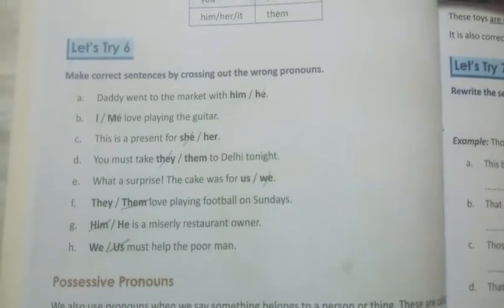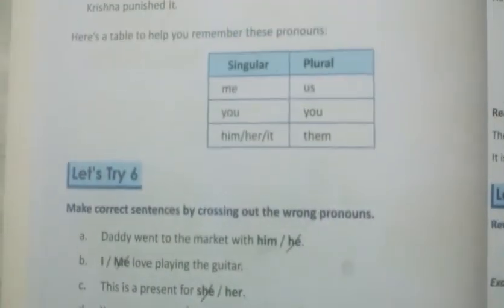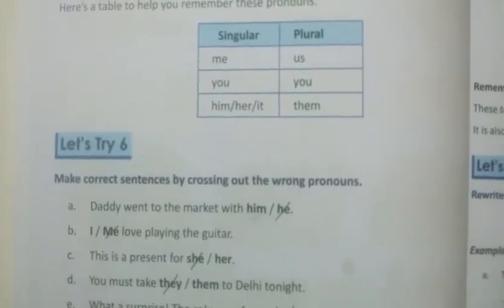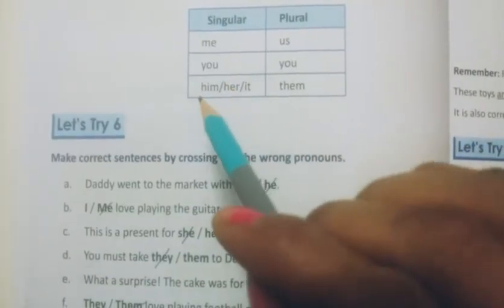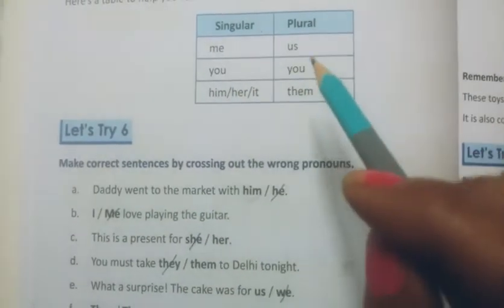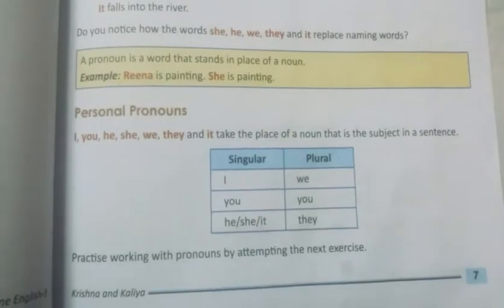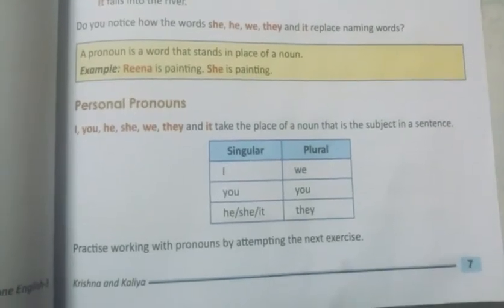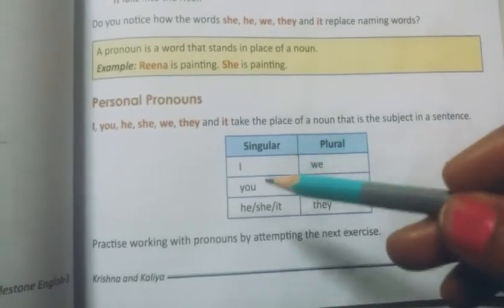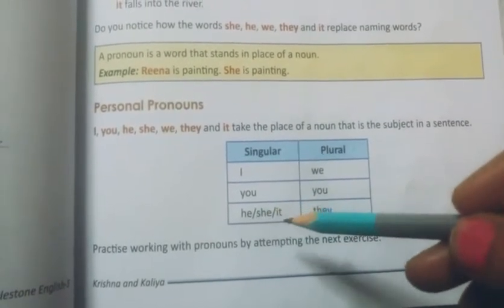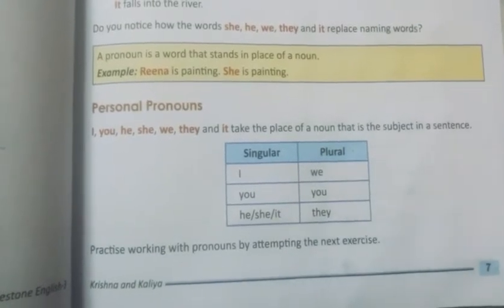To summarize: when we change a pronoun and it is at the place of object, we use me, you, him, her, it, us, you, or them. And when we use a pronoun at the place of subject — at the beginning of the sentence — we use I, you, he, she, it, we, you, or they.